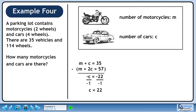Divide each side by minus 1 to get C equals 22. Now plug our C value of 22 into M plus C equals 35. This gives us M equals 13.